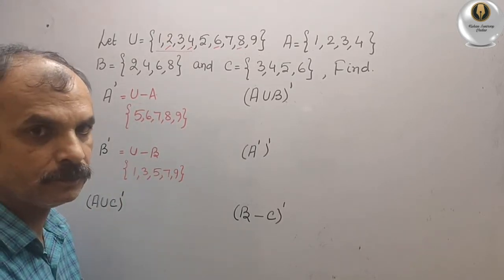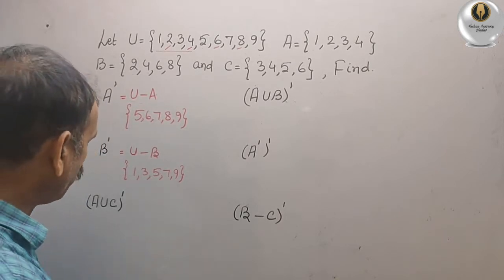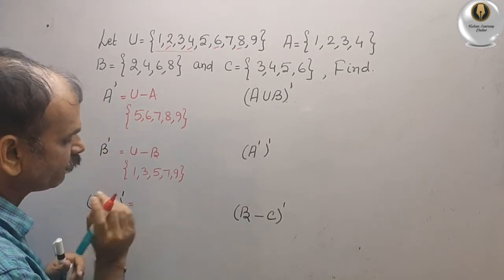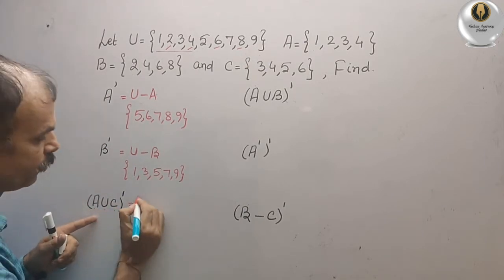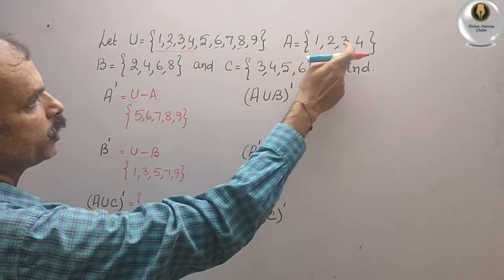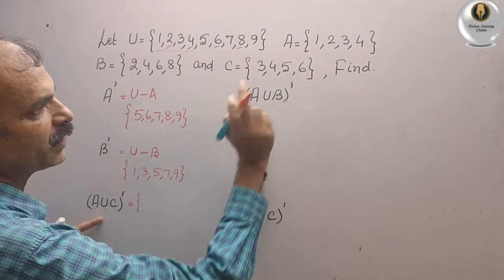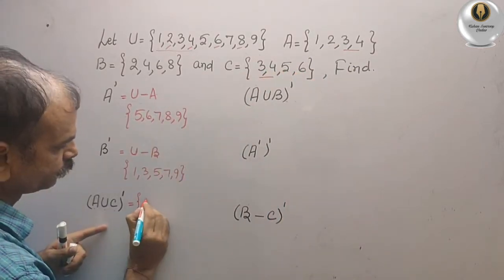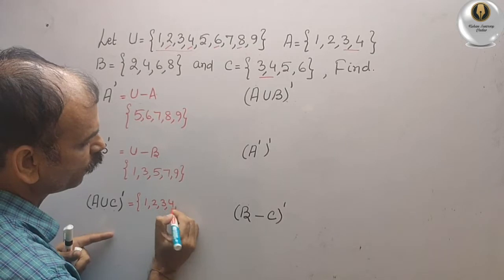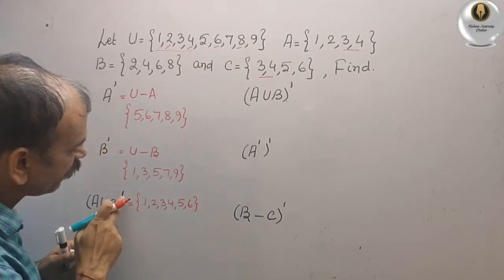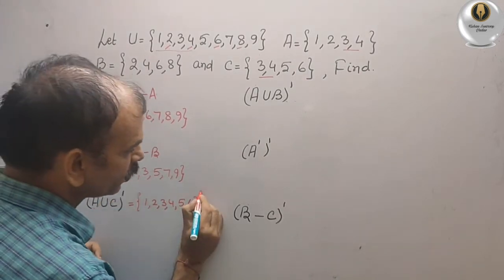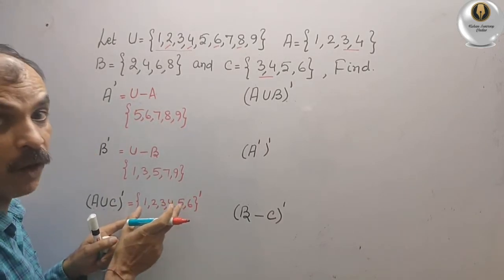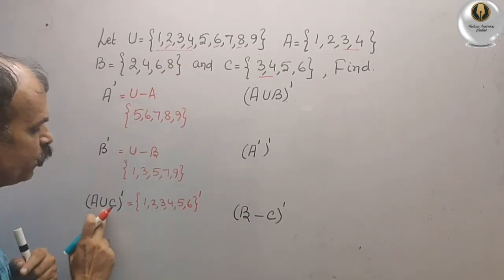Now comes the third one: A union C complement. First we find A union C. A = {1, 2, 3, 4} and C = {3, 4, 5, 6}. So A union C = {1, 2, 3, 4, 5, 6}. Then we take the complement — everything in U except these elements.